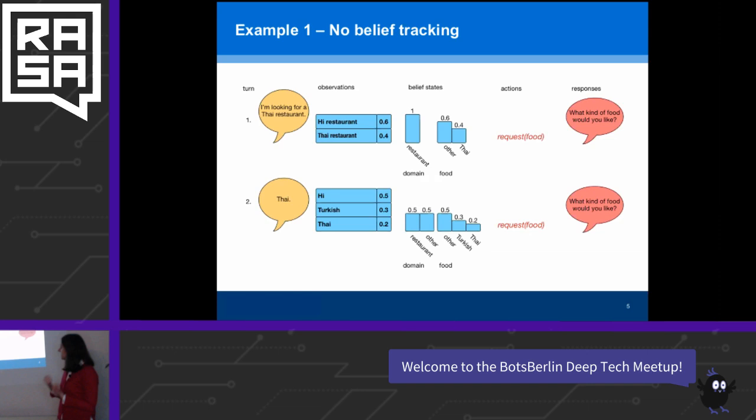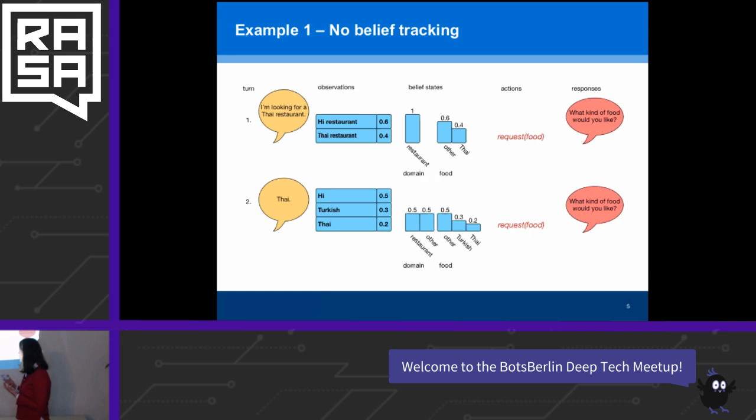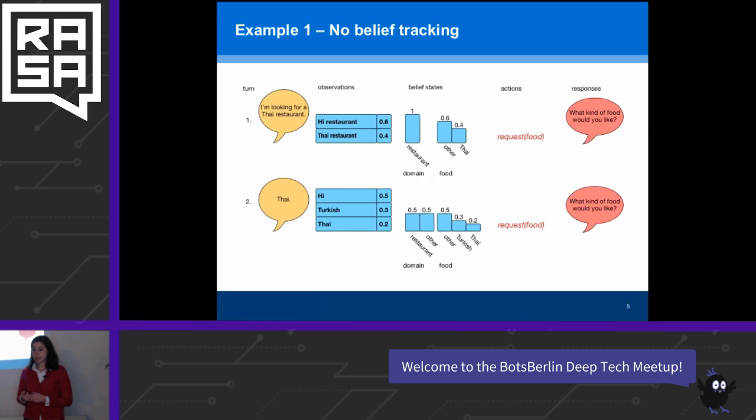The belief state measures what the user intent is — what the user wants from this conversation. We can see that from both of these inputs the user wants a restaurant, but we are not quite sure what kind of restaurant the user wants. Therefore the system asks the user: 'What kind of food would you like?'